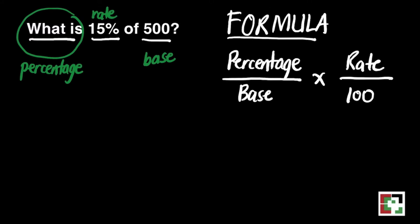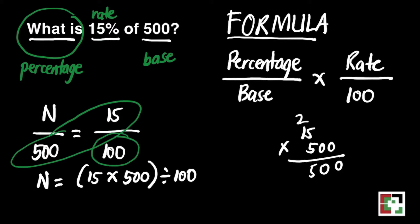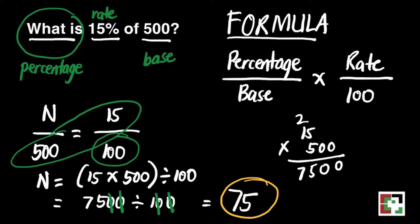Why did I choose this kind of formula? Because it's easier for my students to digest. All we need to do here is to substitute our n is the percentage over 500 is equal to 15 over 100. How to get the value of n? Just do cross multiplication. That's 15 times 500 divided by 100. 15 times 500 will give us 7,500 divided by 100. We can cancel the zeros there and that will give us 75 divided by 1 is equal to 75. The 15% of 500 is 75.